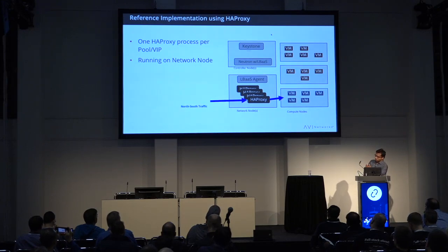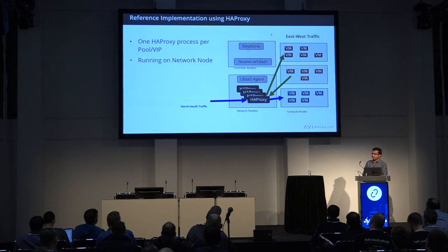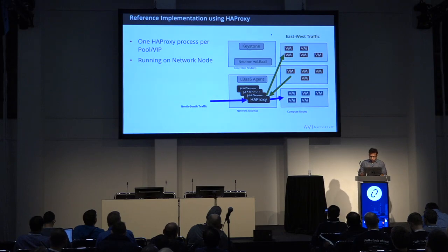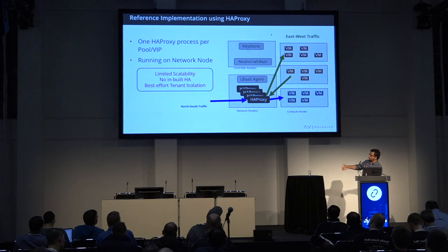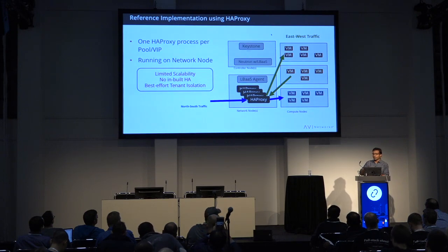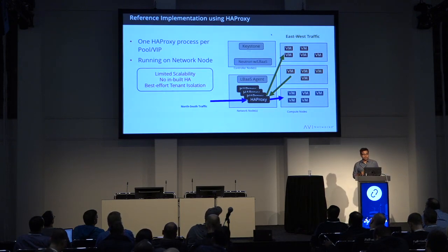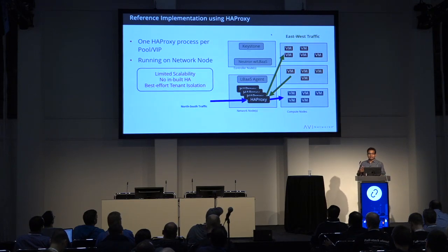This HAProxy approach has some issues. North-south traffic goes through HAProxy on the network nodes and then to VMs, and east-west traffic also has to come to the network nodes and go back. The implementation is limited in scalability because you are tied to how many instances you can run on your network nodes — one single instance is dedicated to one load balancer with no scaling out. There is no built-in HA; you have to run pacemaker or keepalived to keep your HAProxy instances up. Tenant isolation is mostly best-effort.